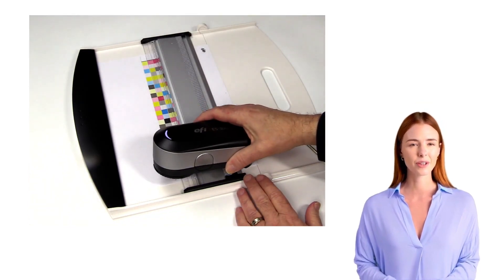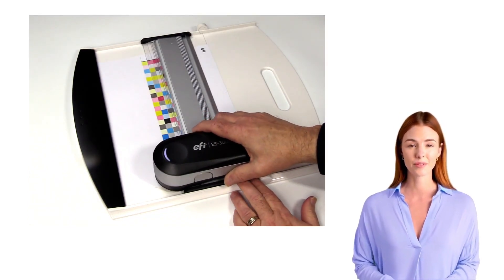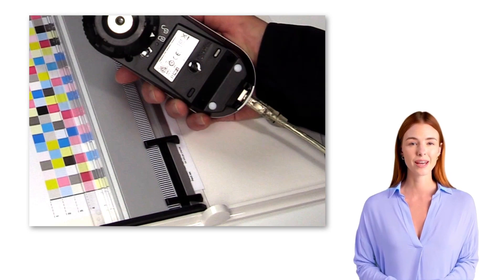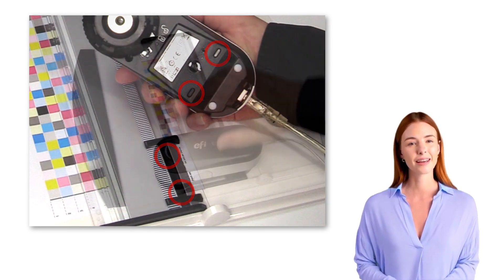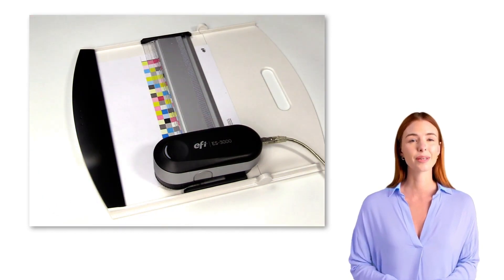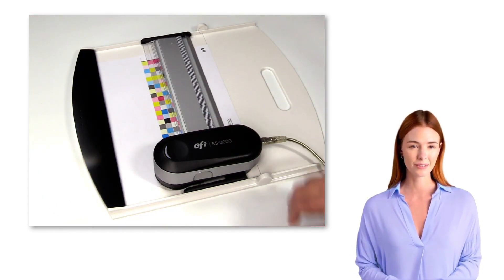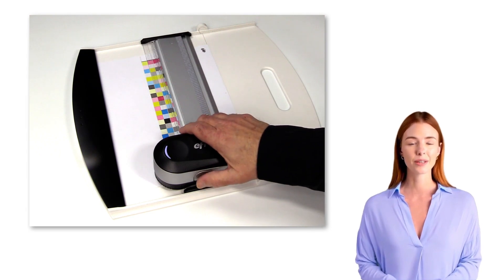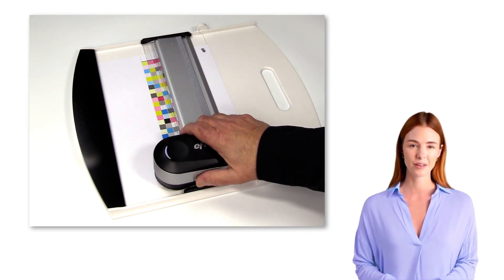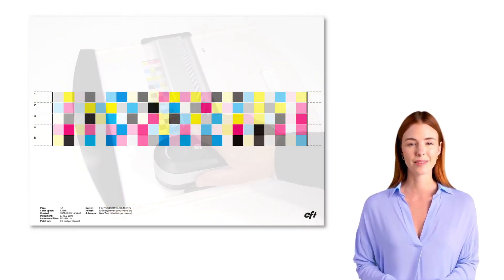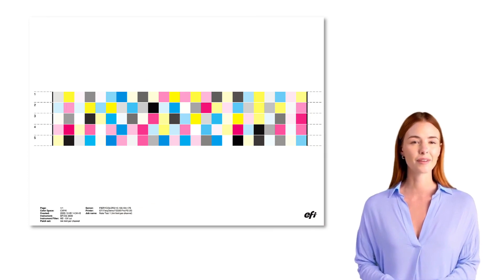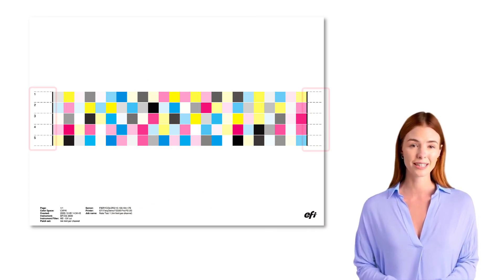Now place the measuring instrument on the black sliding guide on the measuring ruler. The two slots on the bottom of the measuring instrument should fit in the pins on the sliding guide. Move the measuring instrument to either far edge of the printed chart. The ES3000 can measure rows moving in either direction, so it doesn't matter which edge you start on. Make certain that the measurement opening in the head of the instrument is over an unprinted area of your chart and not on a printed patch.